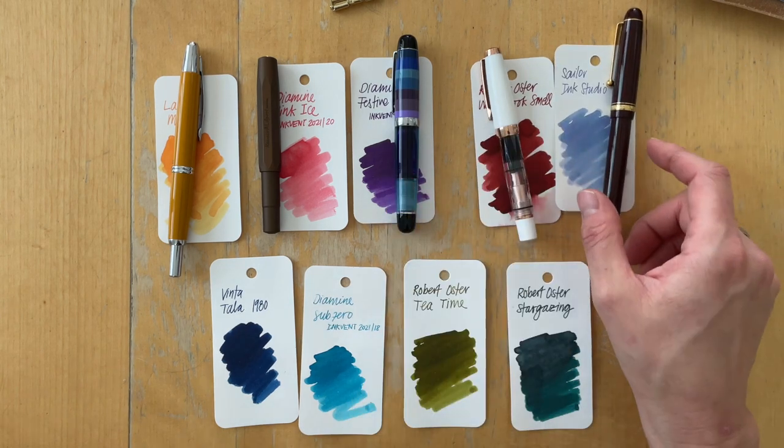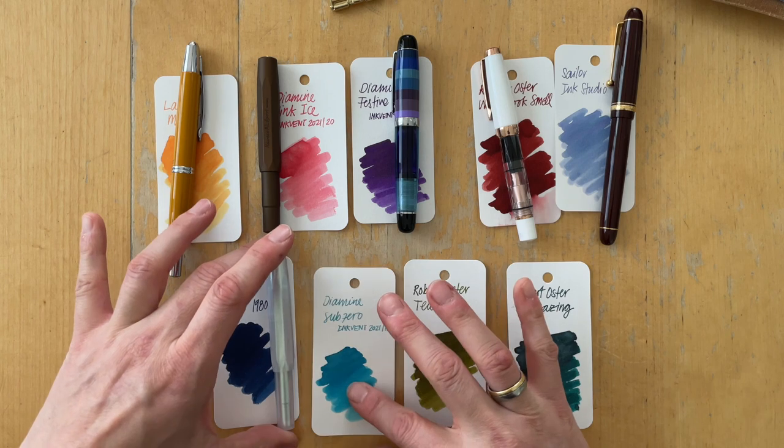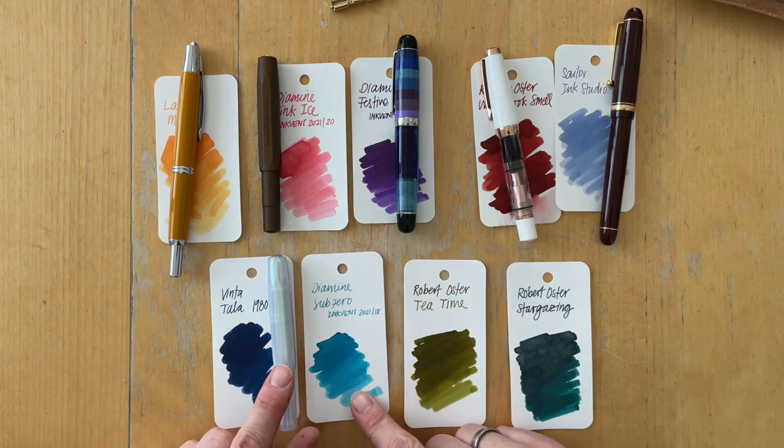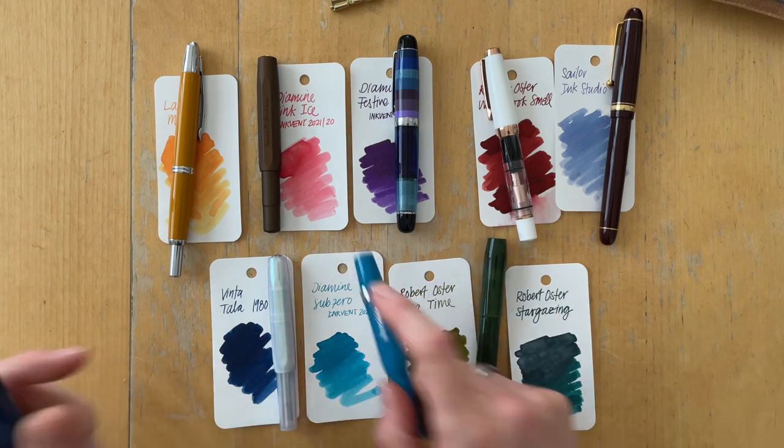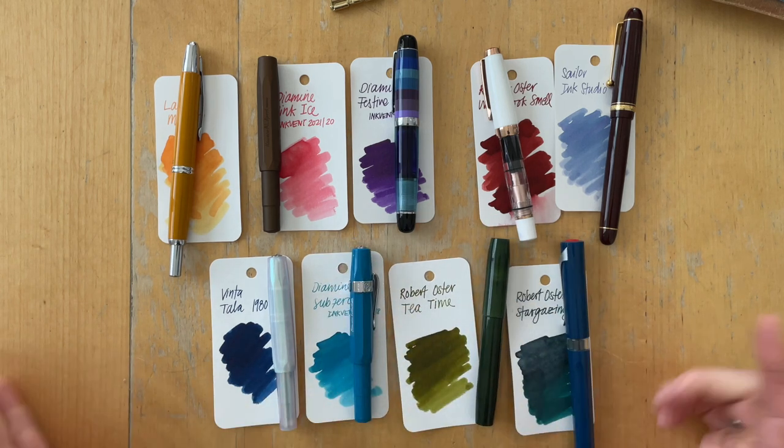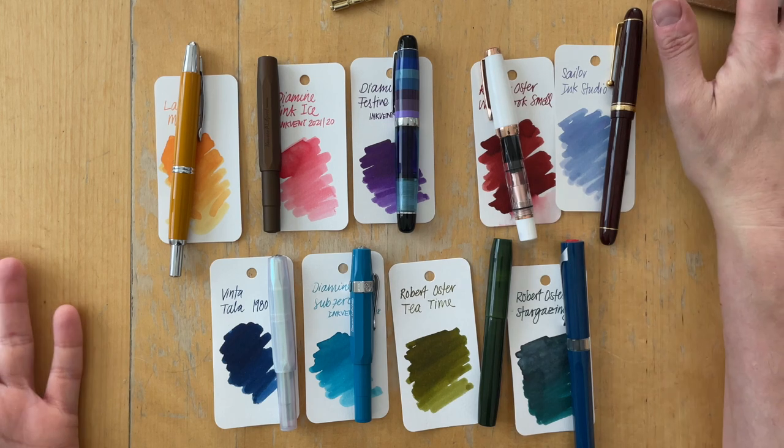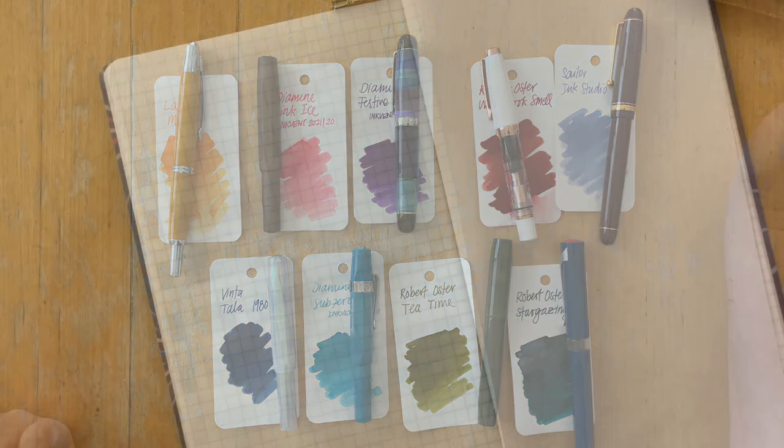The Vinta Tala into this, was still inked up. This was still inked. This was still inked and this was still inked. So let me show you what this color palette looks on paper.